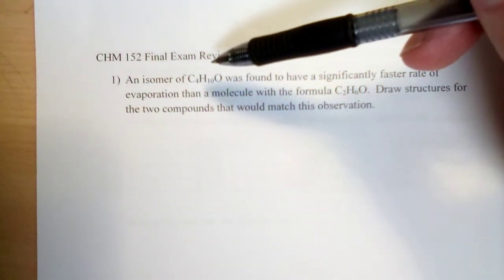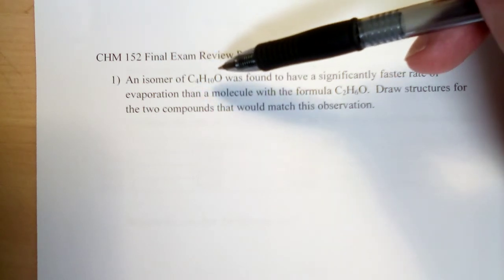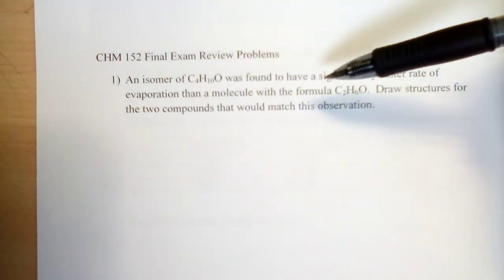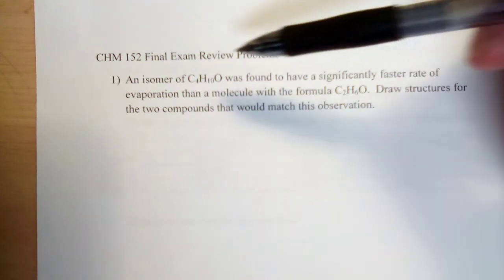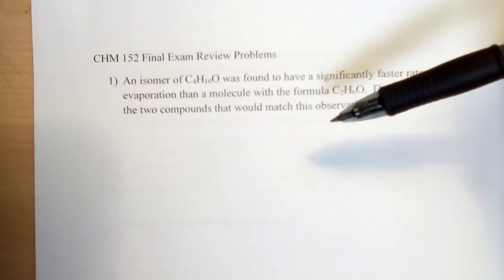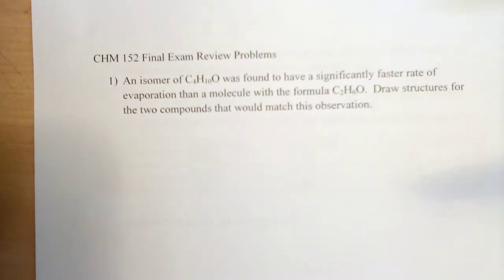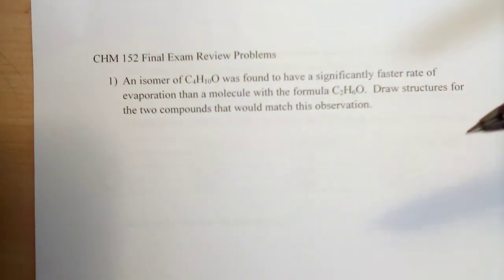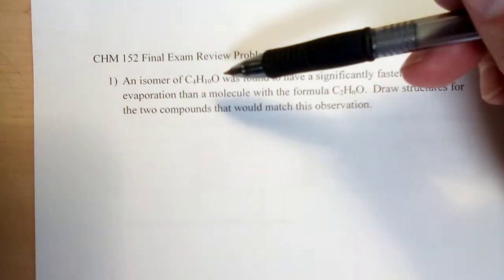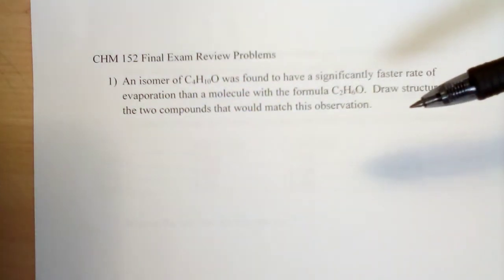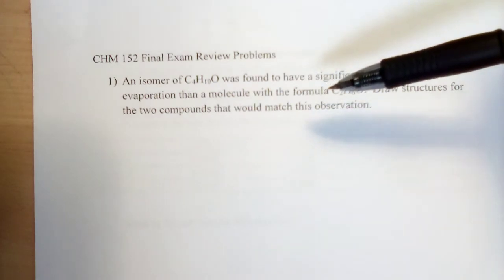We've got an isomer of the formula C4H10O, and this particular compound was found to have a significantly faster rate of evaporation than a molecule with the formula C2H6O. Just in general, as molecules get larger, there's a tendency for them to have stronger intermolecular interactions based on an increase in surface area. So you add more carbons, you might generally expect that the strength of intermolecular interactions would go up, and therefore the molecules would evaporate more slowly.